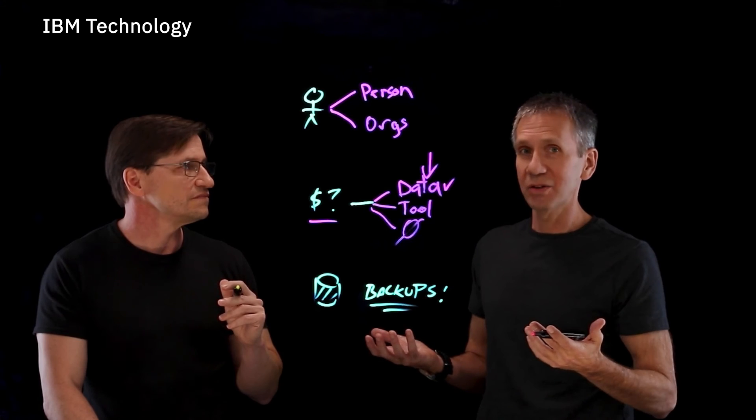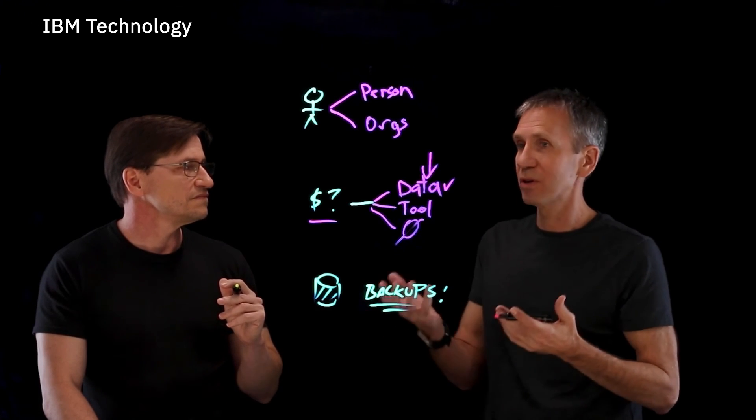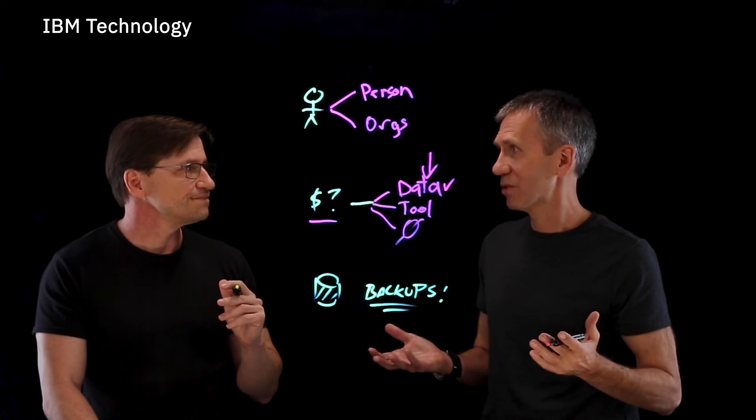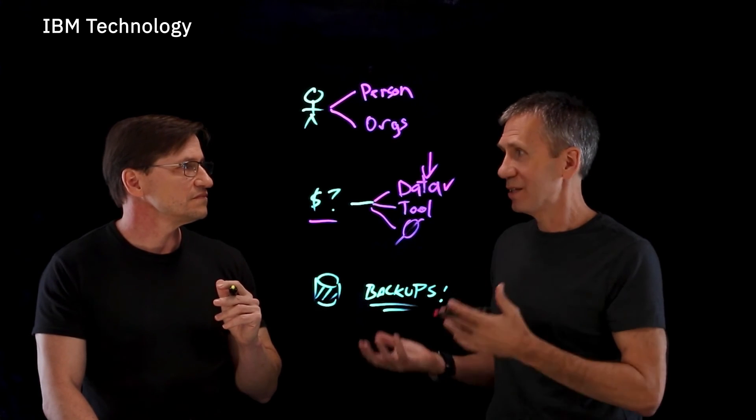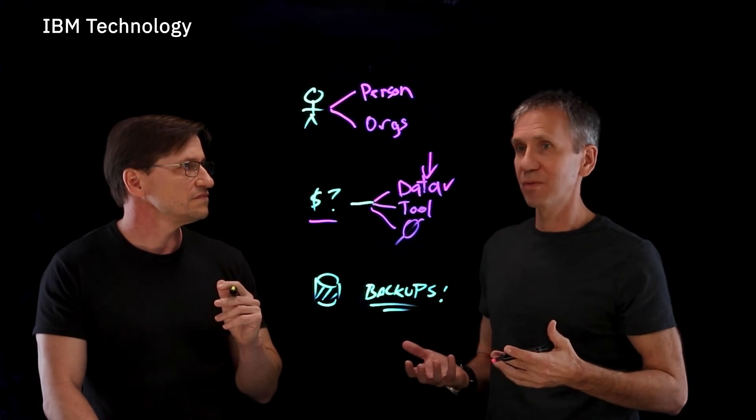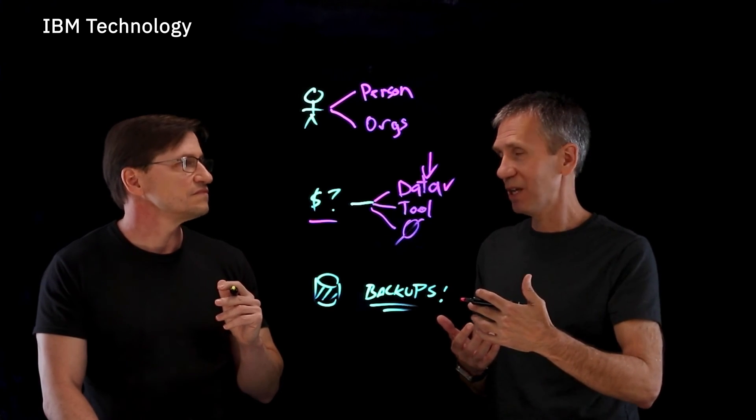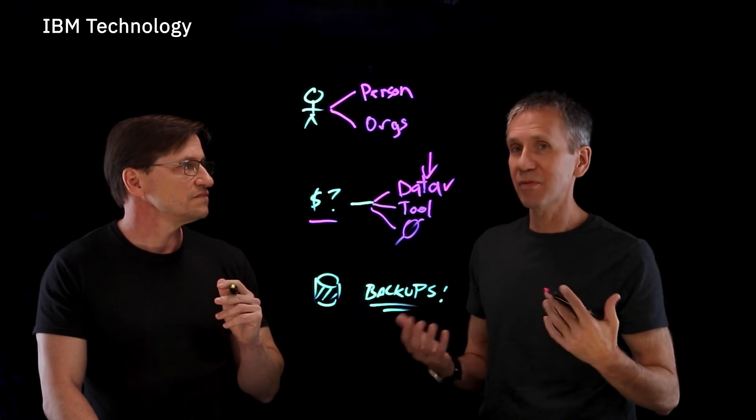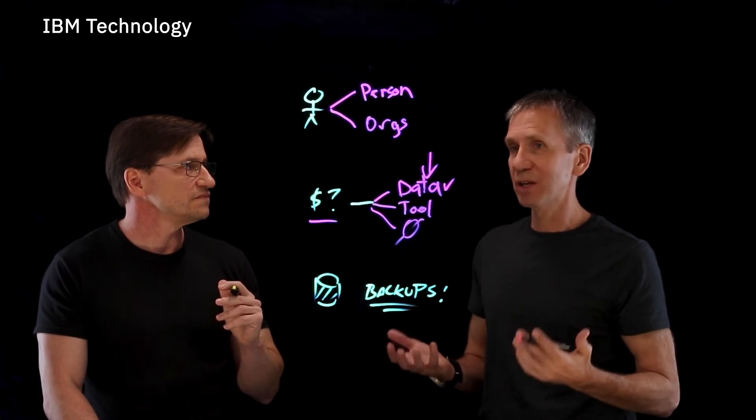And then there's even yet other types of ransomware attacks where I'm not stealing your data or your access, but I'm threatening that I'm going to do a denial of service on your network. And in those cases, we need yet different types of defenses to make sure that we can block the extraneous traffic that's coming in and do it as close to the source as possible. So there's a lot of different mitigations that happen here, but the number one thing is to make sure you're prepared.